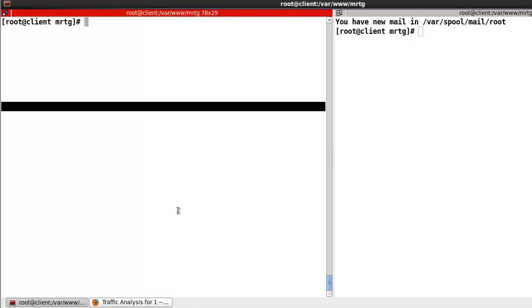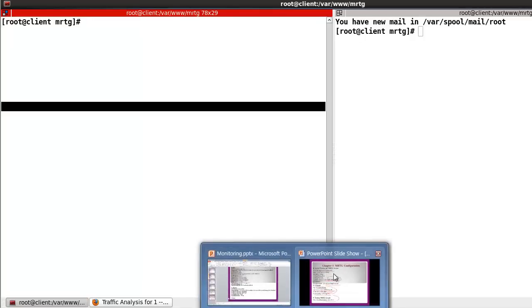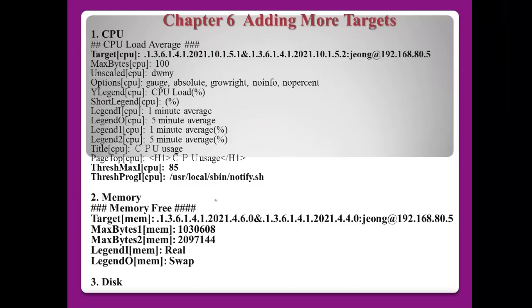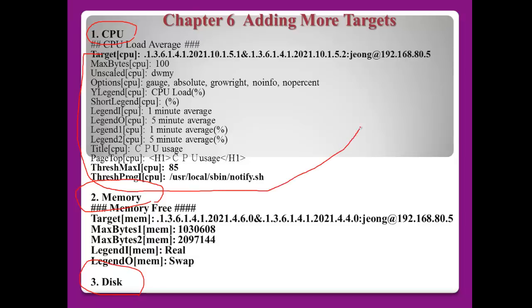Now I just configured only the network interface traffic. But except network interface traffic, we can add targets like CPU, memory, and disk. We can add this kind of configuration to the config file — for example, this one: the target will be the CPU, IP address 85, and this kind of information we can add.